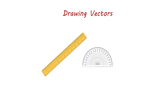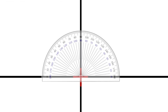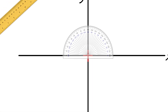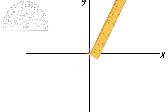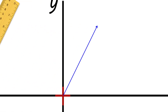Drawing vectors. To represent vectors in a graph accurately, we use a ruler and protractor. The ruler is used to measure the vector length, while the protractor is used to indicate the vector's direction. For example, to draw a vector 15 cm long making a 60-degree angle with the x-axis: first, mark the vector tail at the origin; second, measure a 60-degree angle from the x-axis in an anti-clockwise direction; third, use the ruler to draw a line 15 cm long through those two points; finally, draw the arrowhead to indicate the direction.